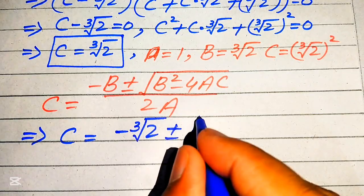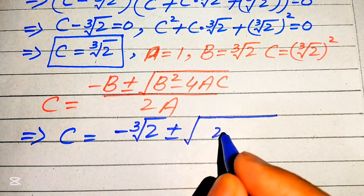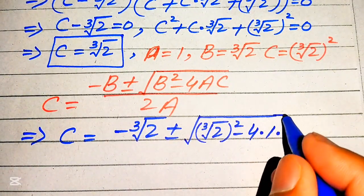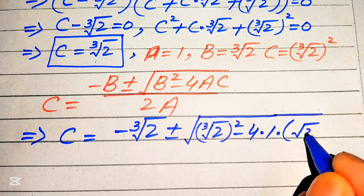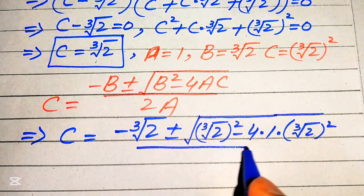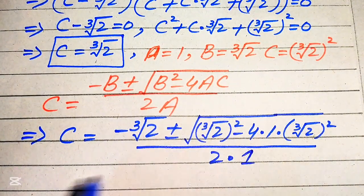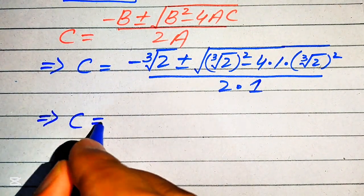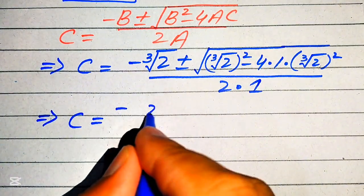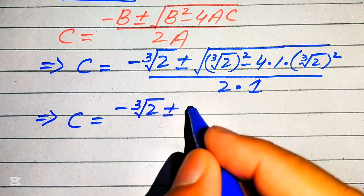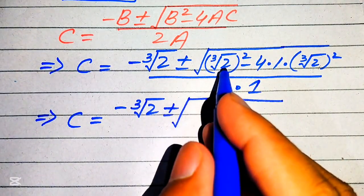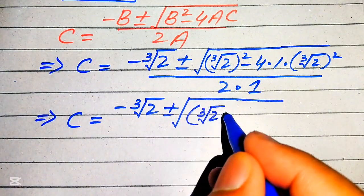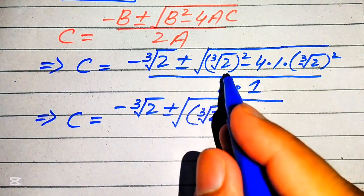Continuing the substitution: the expression under the square root is (cube root of 2) squared minus 4 times (cube root of 2) squared, all divided by 2. We can factor out (cube root of 2) squared as a common term, giving (cube root of 2) squared times (1 minus 4), divided by 2.